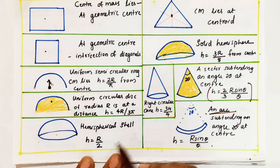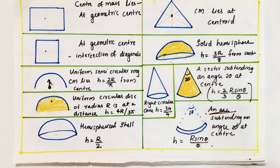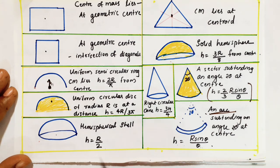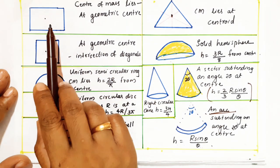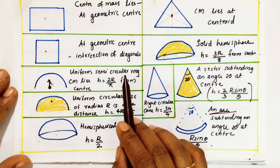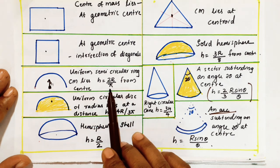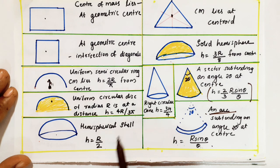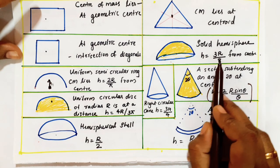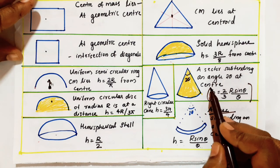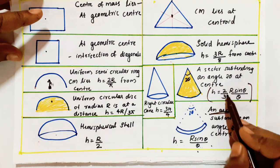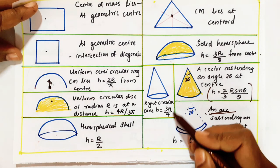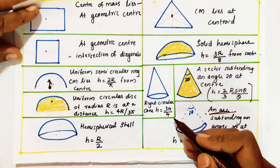For a hemispherical shell, h equals r by 2, and for a solid hemisphere, h equals 3r by 8 from the center. In total we covered 10 cases: triangle at centroid; rectangle and square at geometric center; semicircular ring at 2r by π; semicircular disc at 4r by 3π; hemispherical shell at r by 2; solid hemisphere at 3r by 8; arc at r·sinθ by θ; sector at 2/3 × r·sinθ by θ; and right circular cone at 3H by 4 from the base.